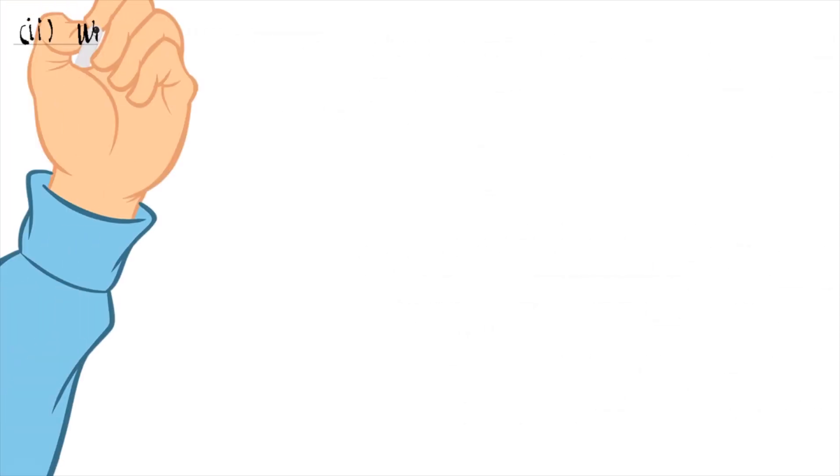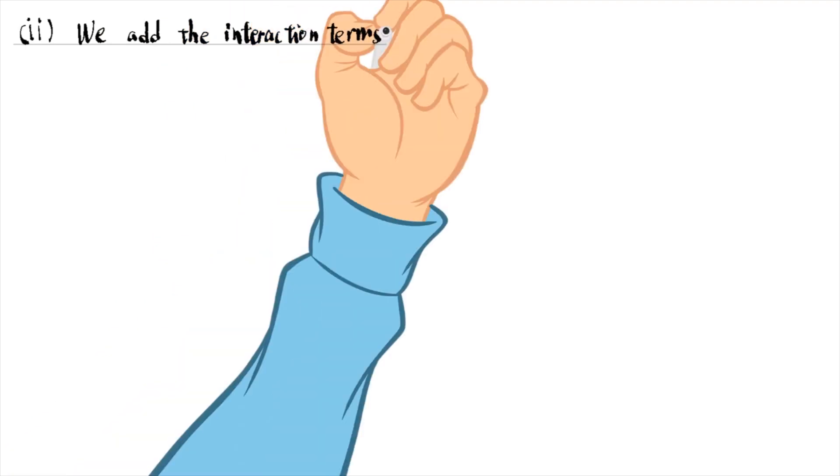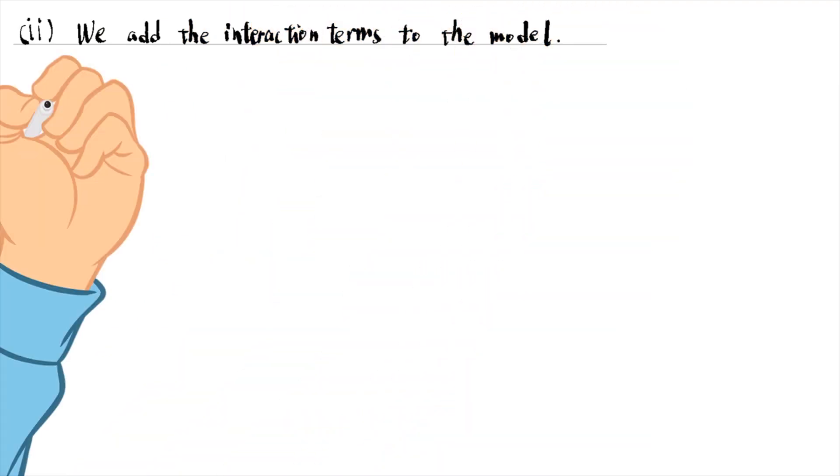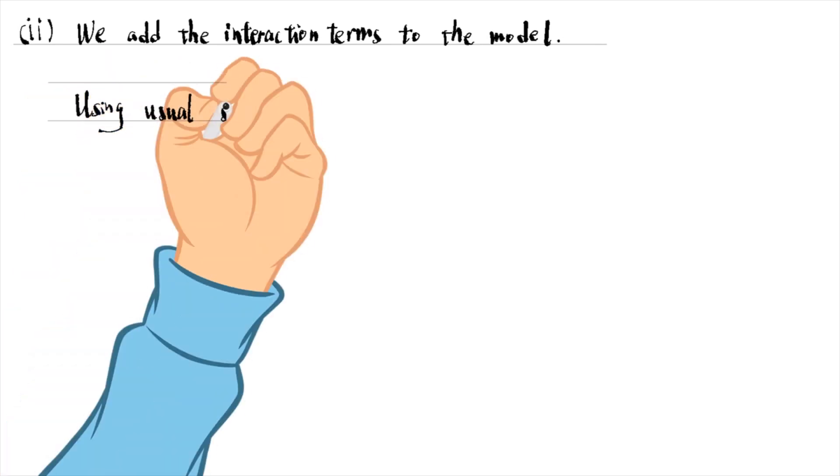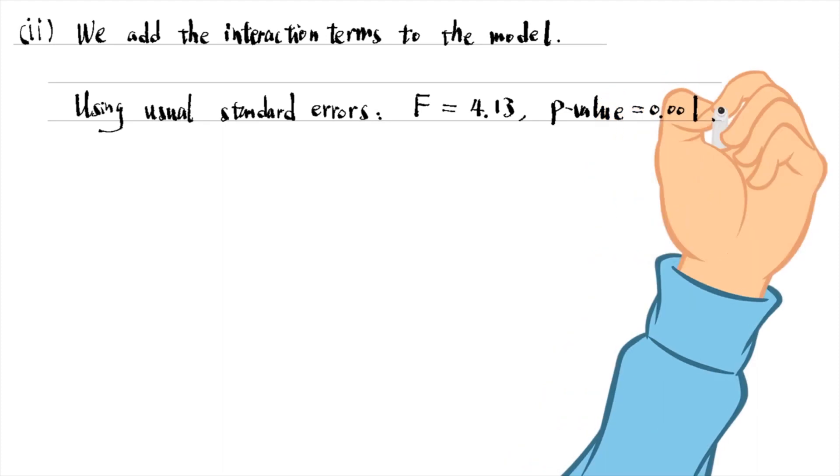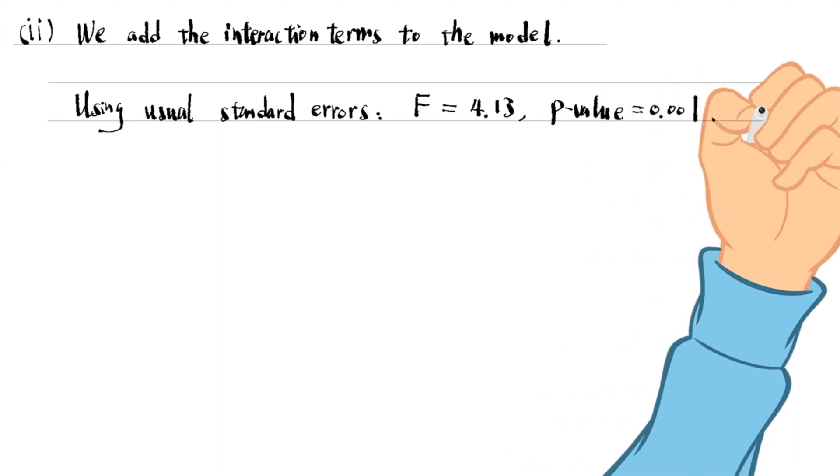In part 2, we add the interaction terms between the variable female and all the other explanatory variables to the model. The F-statistic for the joint significance of the five interaction terms is 4.13.